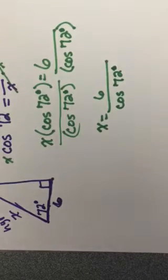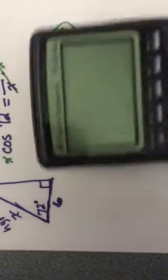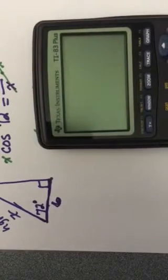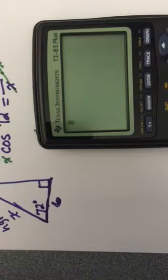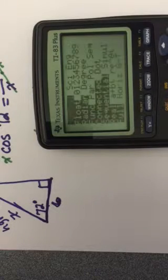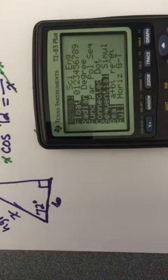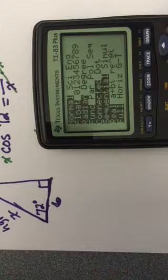That doesn't do us a whole lot of good because I don't really know what that value is. So we're going to use our calculator. Turn it on. Before you do any calculations in trigonometry in your calculator, you need to do this next step. You need to go to mode.